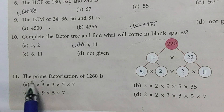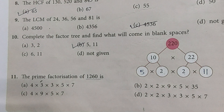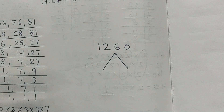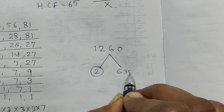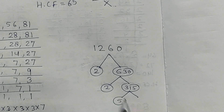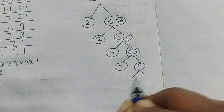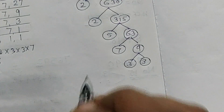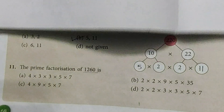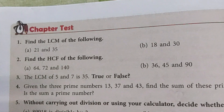Question number 11: find the prime factorization of 1260. Dividing: 1260 ÷ 2 = 630, ÷ 2 = 315, ÷ 3 = 105, ÷ 3 = 35, ÷ 5 = 7, ÷ 7 = 1. So the prime factors are 2 × 2 × 3 × 3 × 5 × 7. Option D is the answer.